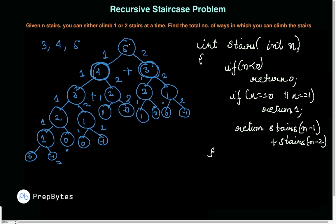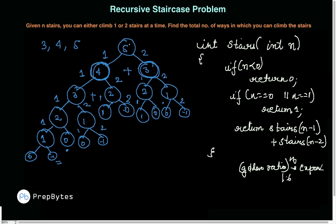If you've written the code yourself, great. Otherwise, trace through it using the recursion tree to verify it's correct. Regarding time complexity: this recursive approach has a time complexity of approximately golden ratio to the power n — about 1.6^n — which is exponential. In an interview, they'll ask you to optimize this.